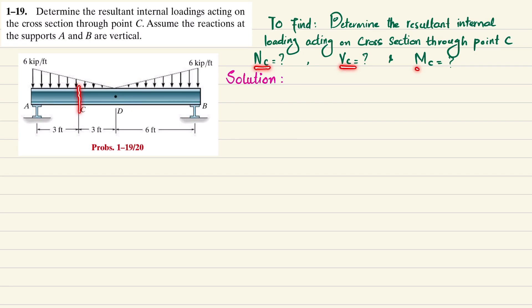We need to find NC, VC, and MC — I will show what these are during the solution. It is given that the reactions at A and B are vertical, so removing the supports gives us reaction force RA at A and vertical reaction force RB at B. Since RA and RB are unknown, we will find them using equilibrium conditions. There is a 6 kips per foot load that is a uniformly decreasing load.